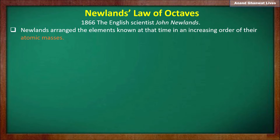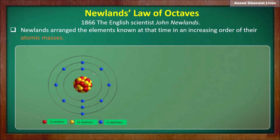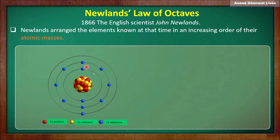Let us learn the meaning of atomic mass again. For that, let us take an atom of sodium. Sodium has atomic number 11, meaning the number of protons is 11, number of neutrons is 11, and number of electrons is also 11. The protons and neutrons are in the nucleus and electrons are revolving in different shells. The 11 electrons are distributed as 2, 8, and 1. Atomic mass is nothing but the number of protons plus the number of neutrons. Therefore, sodium which has 11 protons and 11 neutrons has an atomic mass of 11 + 11 = 22.